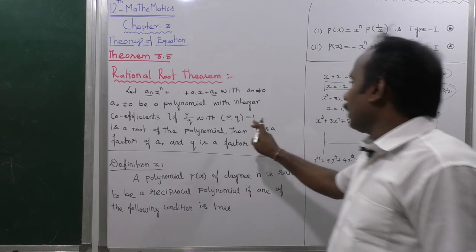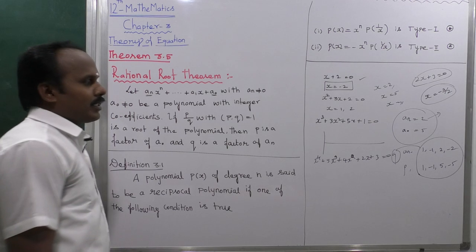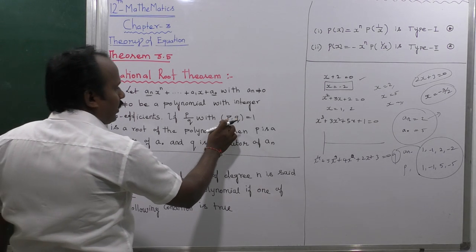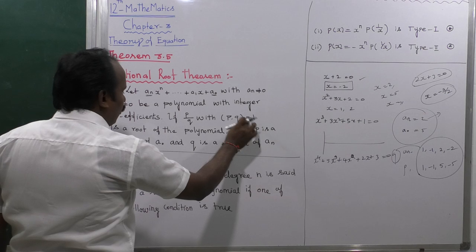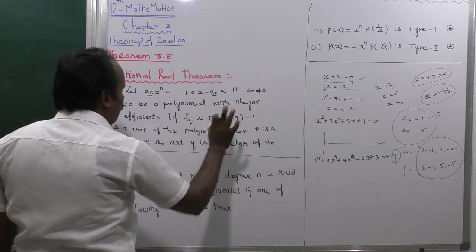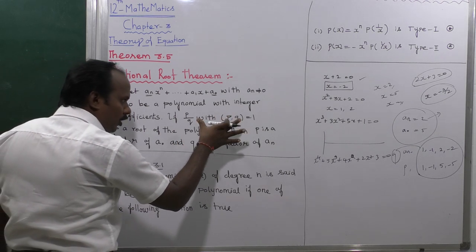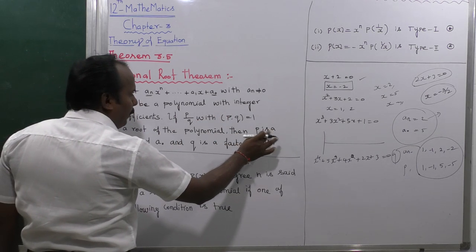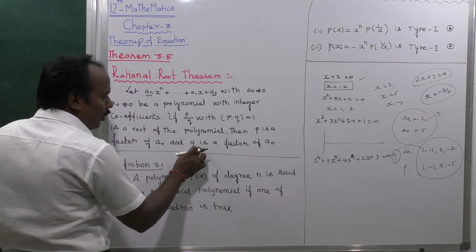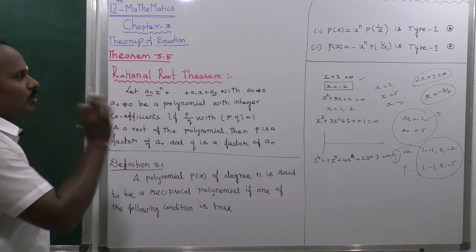The main statement is the possible values of p/q with gcd(p, q) = 1. This condition is satisfied. If p/q with gcd(p, q) = 1 is a root of the polynomial, then p is a factor of a_0 and q is a factor of a_n. That is the Rational Root Theorem.